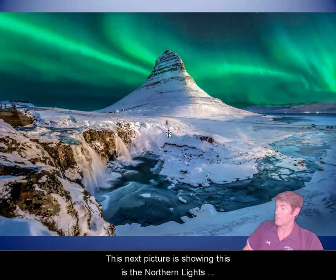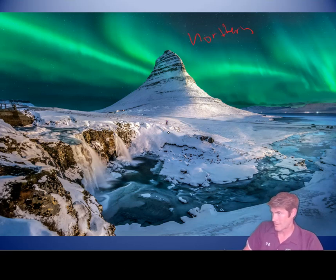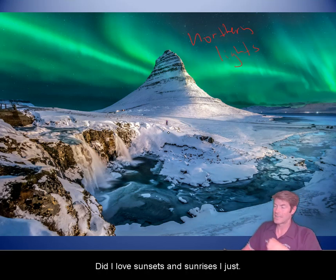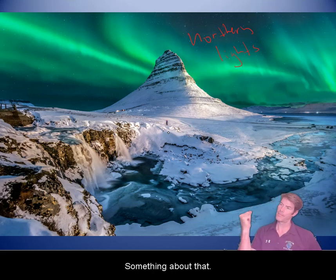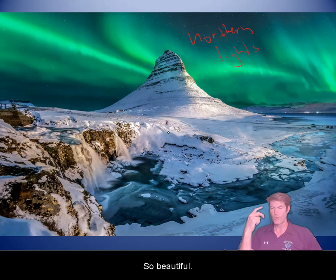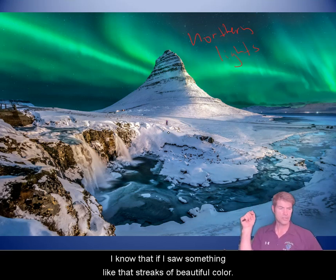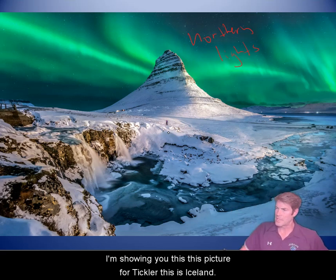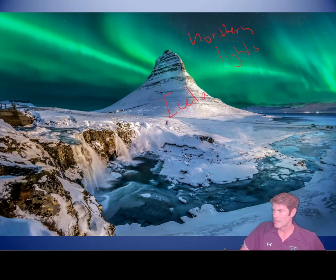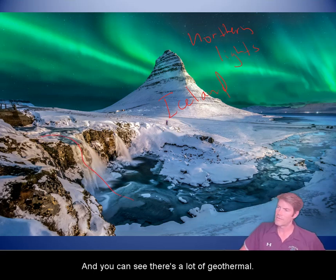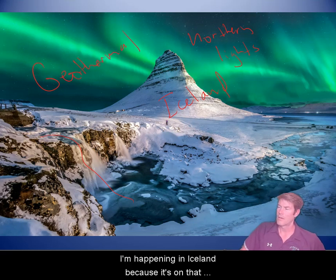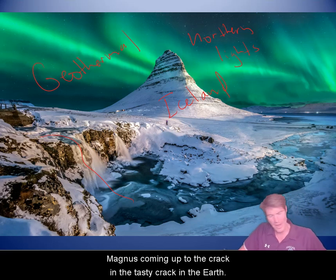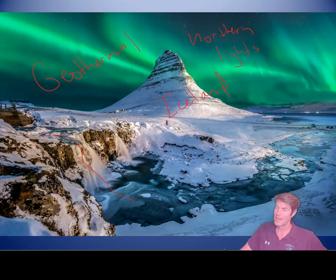This next picture shows the Northern Lights — just beautiful. That's one of the things I want to see in person. Those colors in the sky are just incredible. I'm showing this picture in particular because this is Iceland. You can see a lot of geothermal activity happening in Iceland because it's on that mid-ocean ridge, where magma is coming up through a crack in the earth. This funky little island developed because of that.